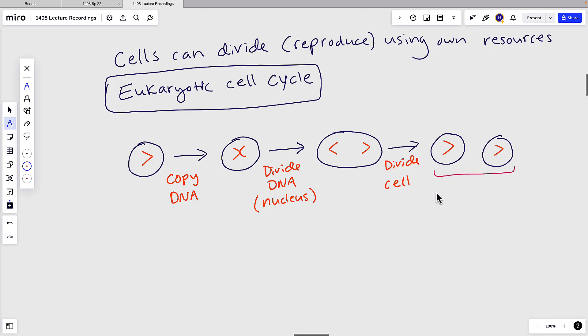These cells are called daughter cells. There's two of them, and daughter doesn't refer to male or female. That's just what we call any cells coming from a division. And they are identical to each other. So their genetics are identical if everything goes properly.